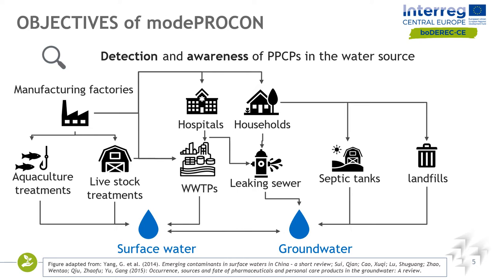These different sources can lead to the presence of PPCPs both in groundwater, including karst systems and porous aquifers, as well as in surface water bodies. Finally, these contaminants could also enter the water supply system and it is therefore important to be able to detect them and describe their pathways towards the drinking water supply system.